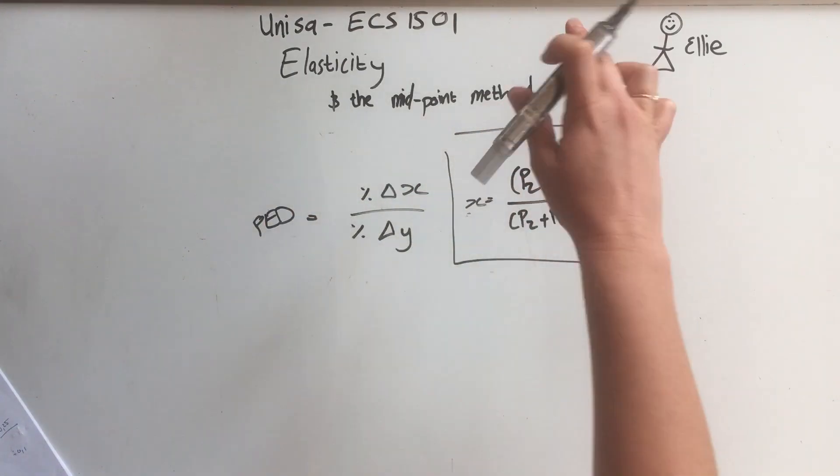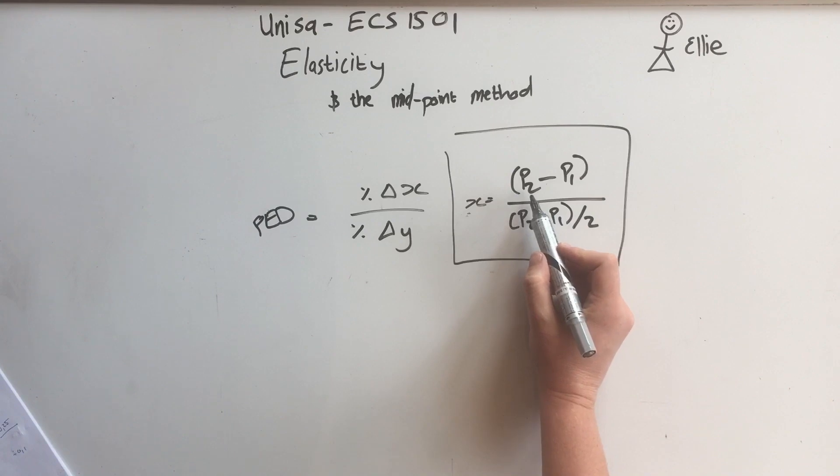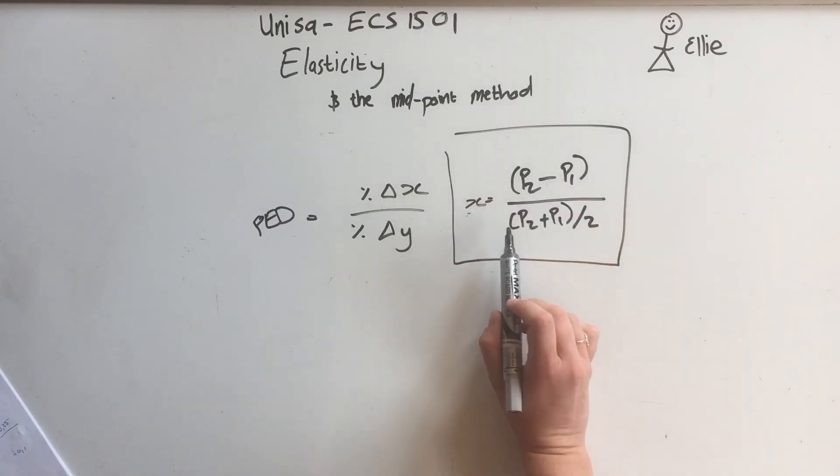So price 2 minus price 1 at the top, and at the bottom price 2 plus price 1 divided by 2. You do that for the X.